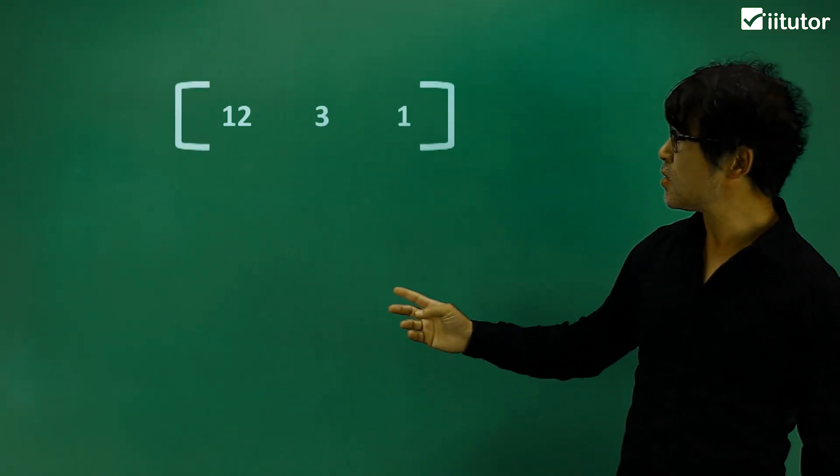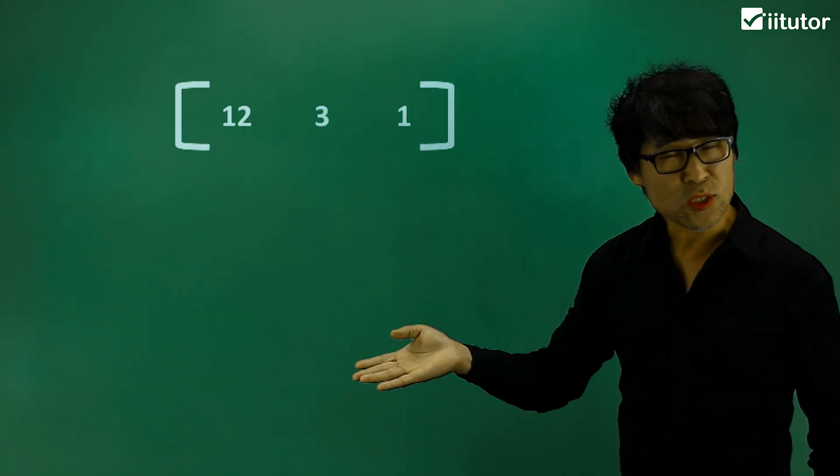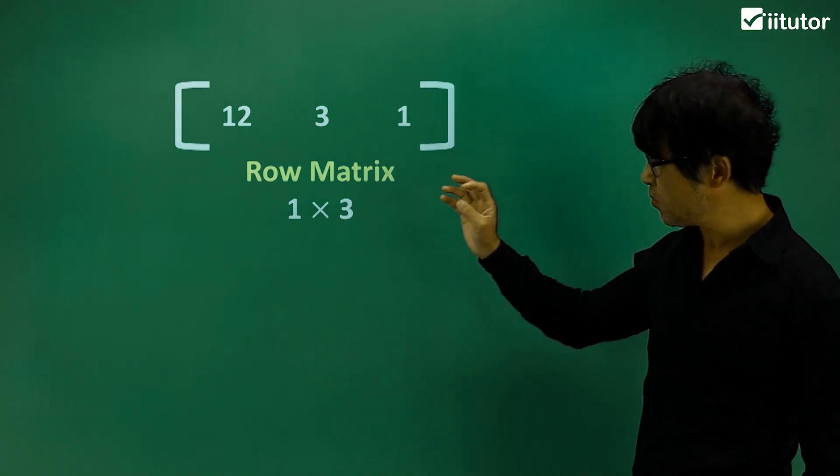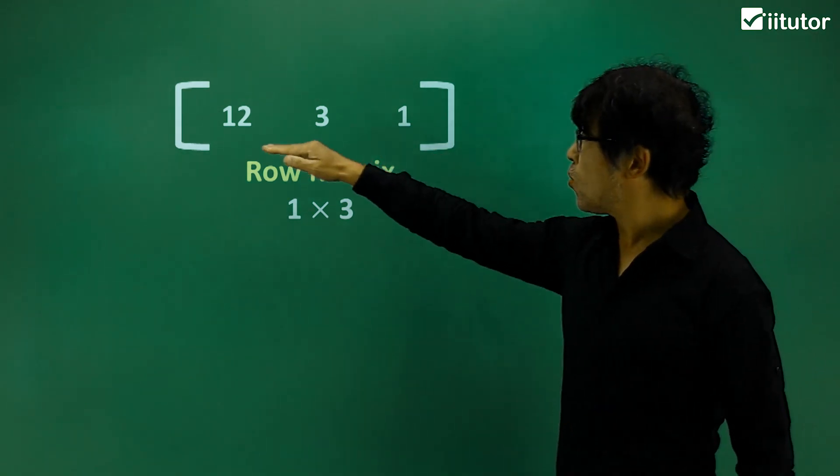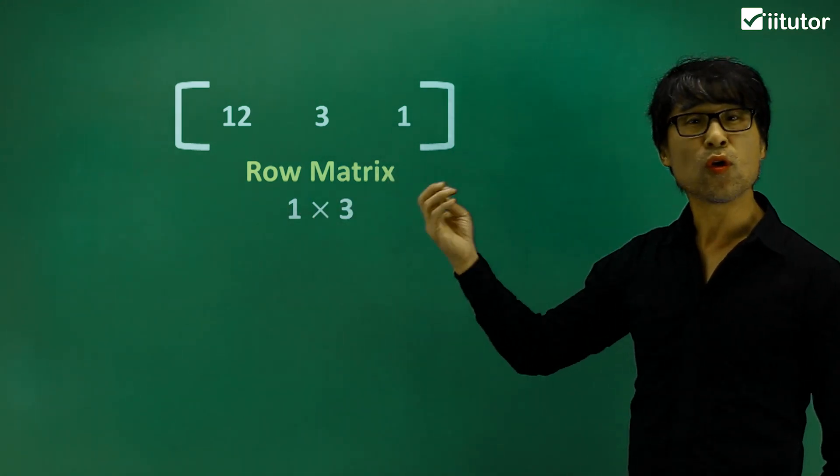What else here? So we have only one row but three columns. What do you want to call this? Yeah, easy, it's a row matrix. Because it's only one row and then three columns, so we call it just a row matrix.